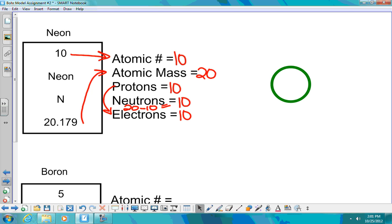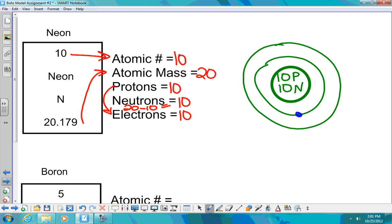So in my nucleus, I have 10 protons, 10 neutrons. And I'm going to need 10 total electrons. And I can get that with just two shells. Two on the inside, eight on the second shell. That is my neon Bohr model atom.